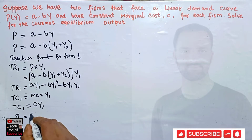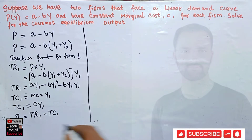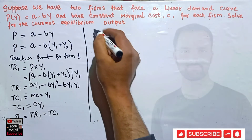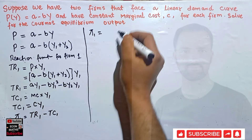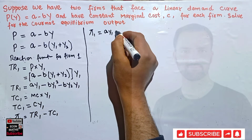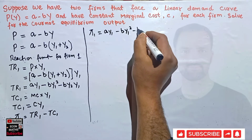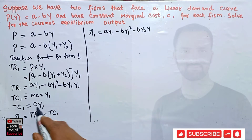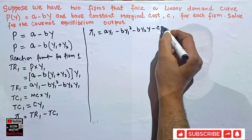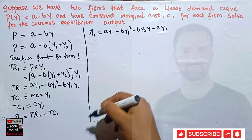Profit for firm one is total revenue minus total cost. So: π1 = aY1 - bY1² - bY2Y1 - cY1. This is our profit function for firm one. Now we apply the first-order condition for profit maximization.